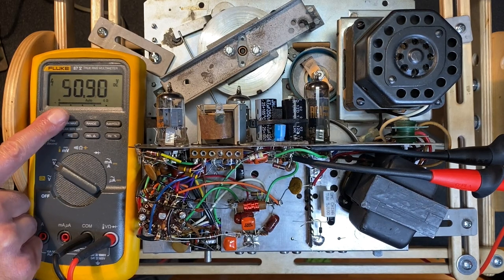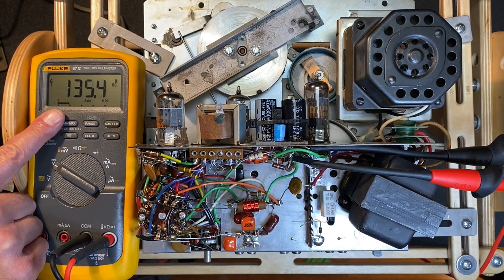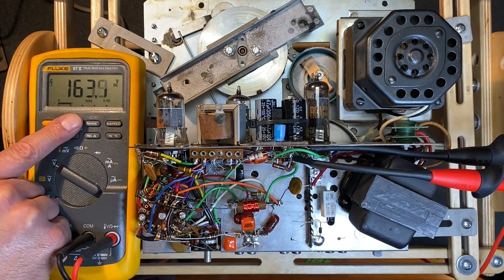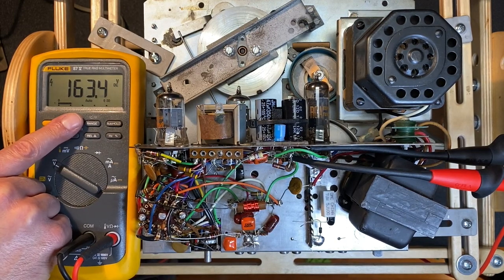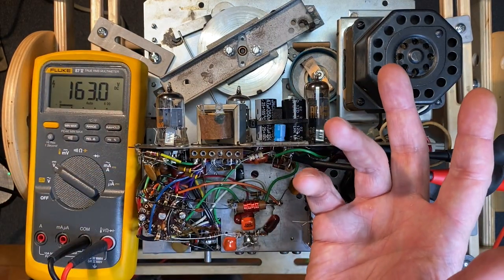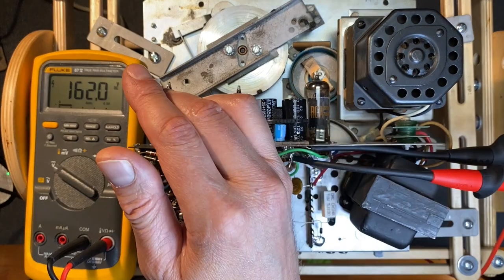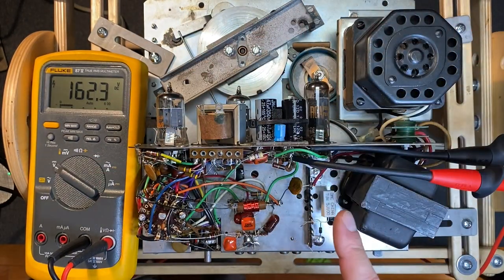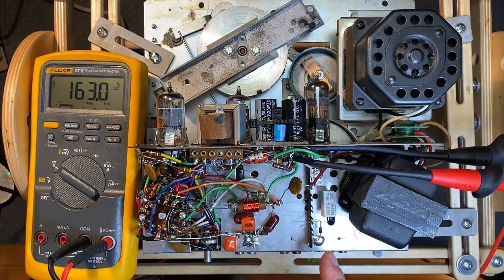Put our fluke meter into DC mode, and let's power up the player. And let's monitor the meter. We're looking for 163 volts. Just about there. And our AC input voltage is dead on at 120 volts. So our selenium rectifier replacement circuit is working perfectly. I'm going to power the unit down now and permanently install the resistor and diode.